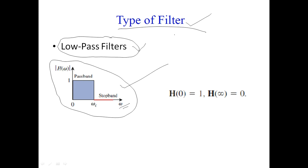To calculate the transfer function, we assume initial conditions are zero and work in the s-domain — replacing inductors with sL, capacitors with 1/sC, and keeping resistors as R. We convert voltage and current sources using Laplace transformation, then calculate output voltage divided by input voltage. Finally, we replace s with jω to get H(jω), the transfer function as a function of frequency.